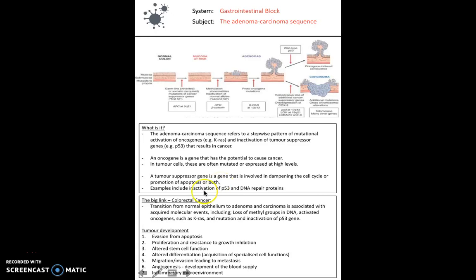The biggest link of the adenoma carcinoma sequence is to colorectal cancer, which was discussed in the previous video. Here is a seven-step guide to tumour development, detailing how different processes must occur, such as angiogenesis — the development of the tumour's blood supply — and how it might lead to metastasis.